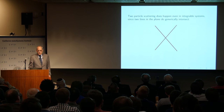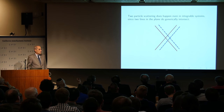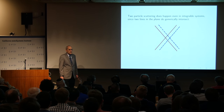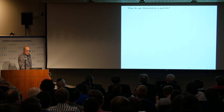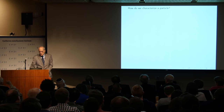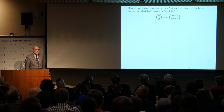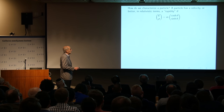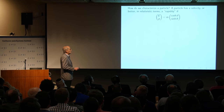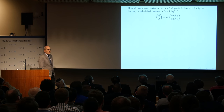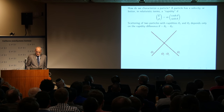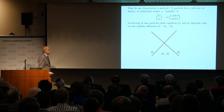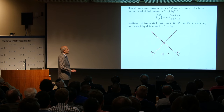Two-particle scattering does happen even in integrable systems, because any two generic lines in the plane do intersect. I've drawn two lines and displaced them parallel to themselves and they still intersect, so there's no problem with two-particle scattering. A particle has a velocity, but in relativistic terms it's better to speak of the rapidity θ, so the energy and momentum are the mass times cosh θ and sinh θ. If you're not familiar with that, just think of θ as the velocity, which it is in the non-relativistic limit.